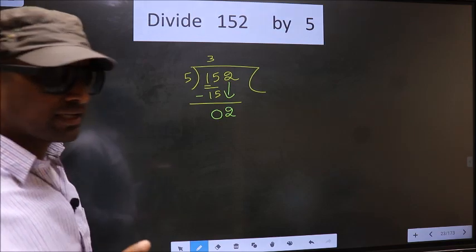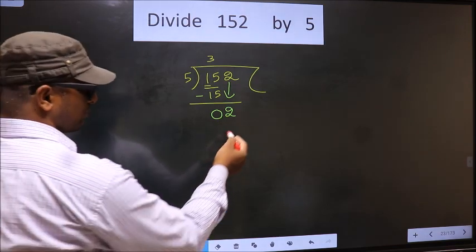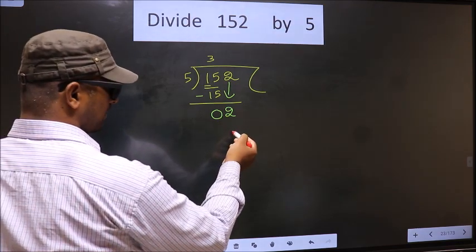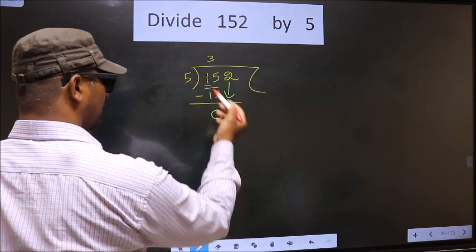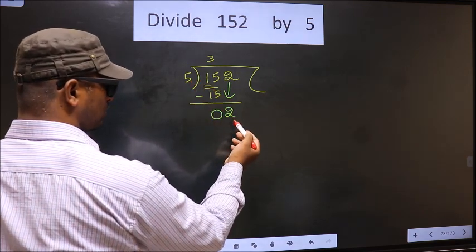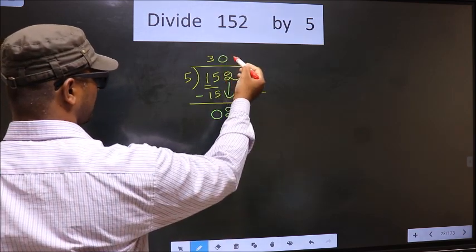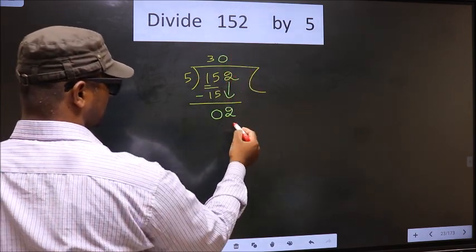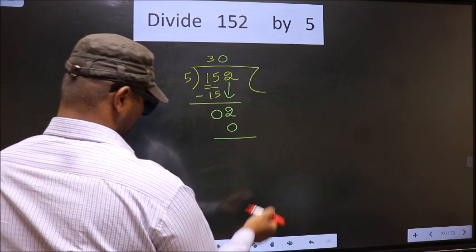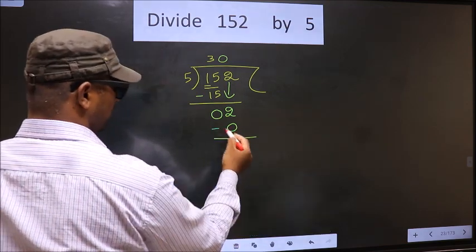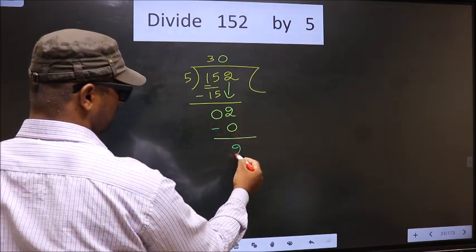Instead, you should think of what number we should write here. If we write 5, that is larger than 2. So what we do is write 0 here. 5 times 0 equals 0. Now you subtract: 2 minus 0 equals 2.